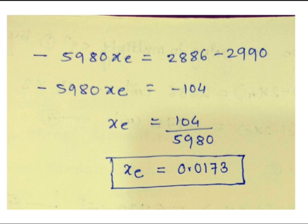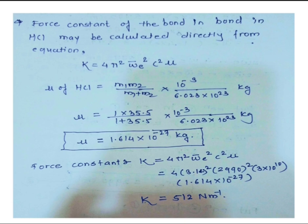To calculate the force constant, we use the equation k = 4π²ω̄e²c²μ, where k is the force constant, π is a constant, ω̄e is the equilibrium frequency we calculated, c is the velocity of light in cm/s, and μ is the reduced mass. We first need to calculate the reduced mass, then find the force constant.